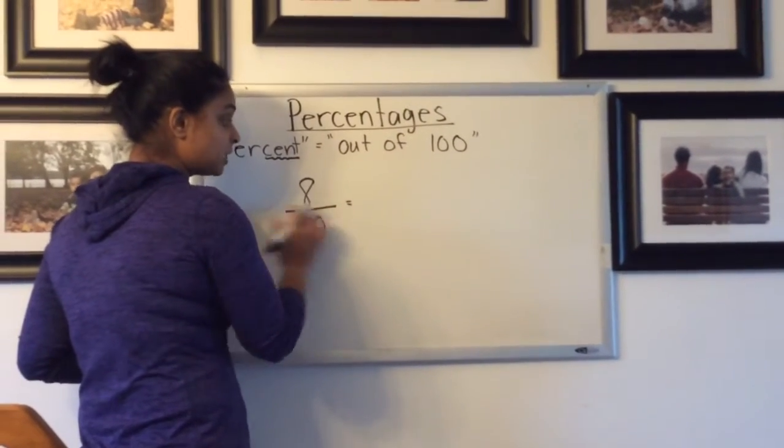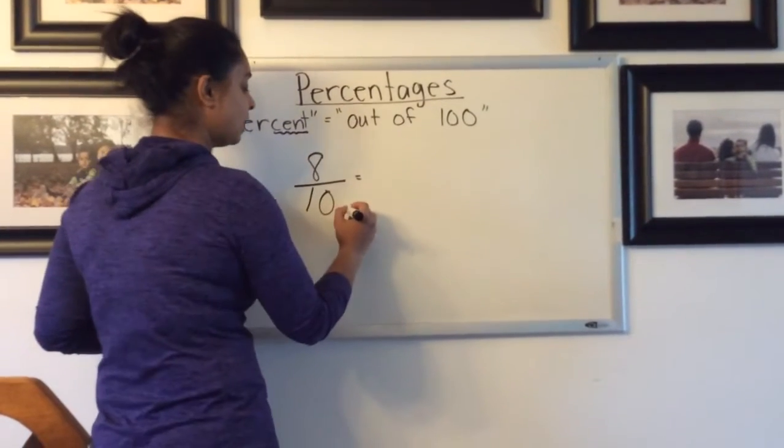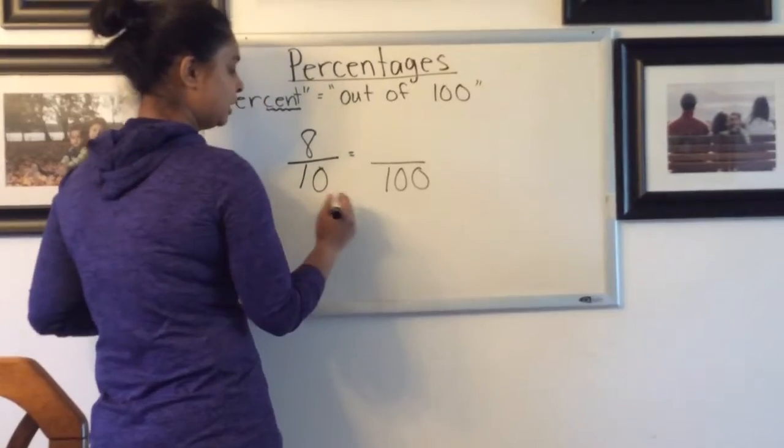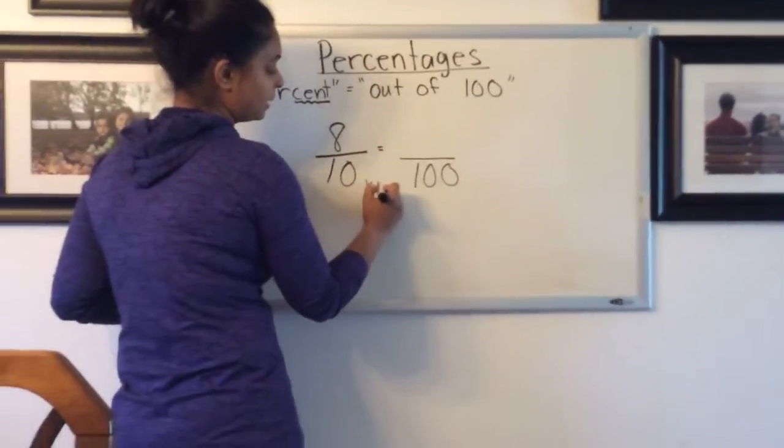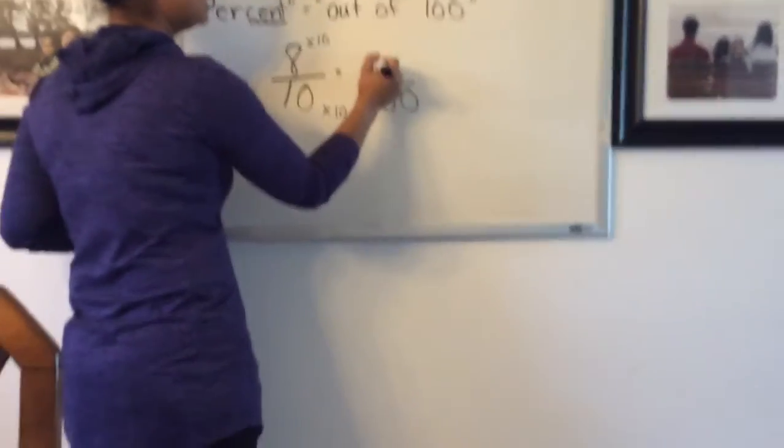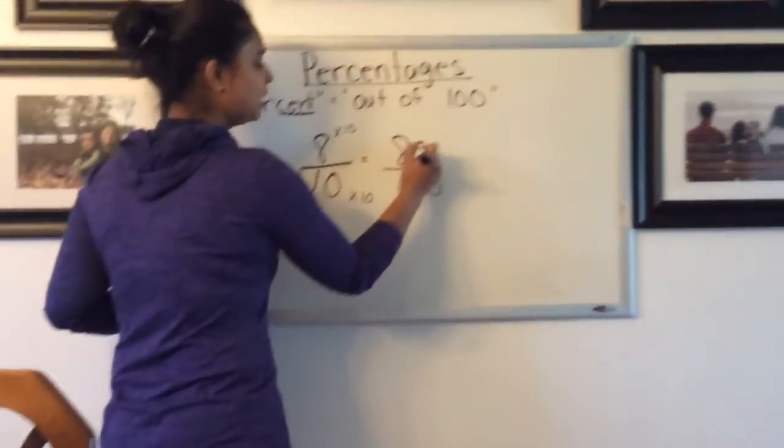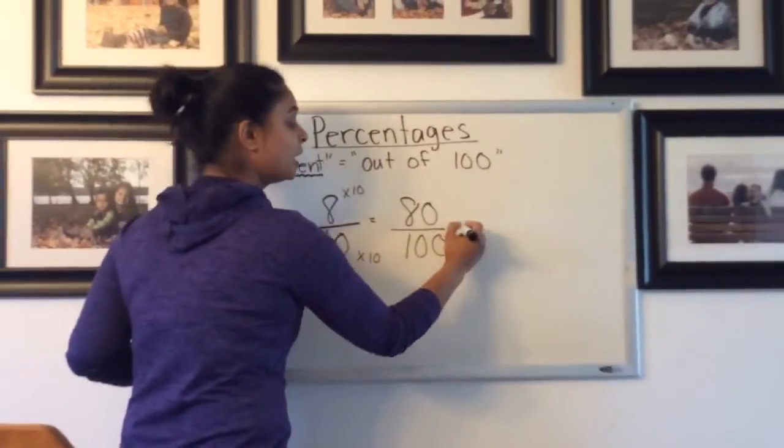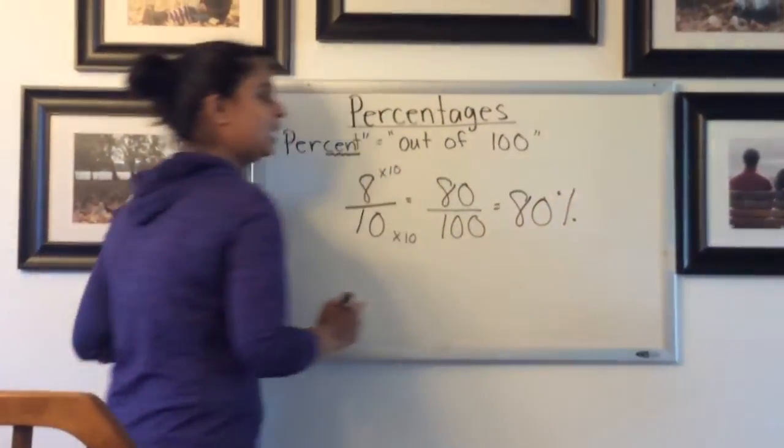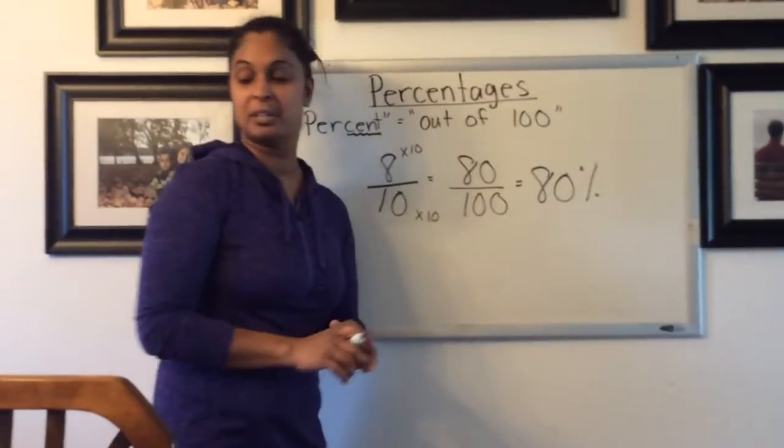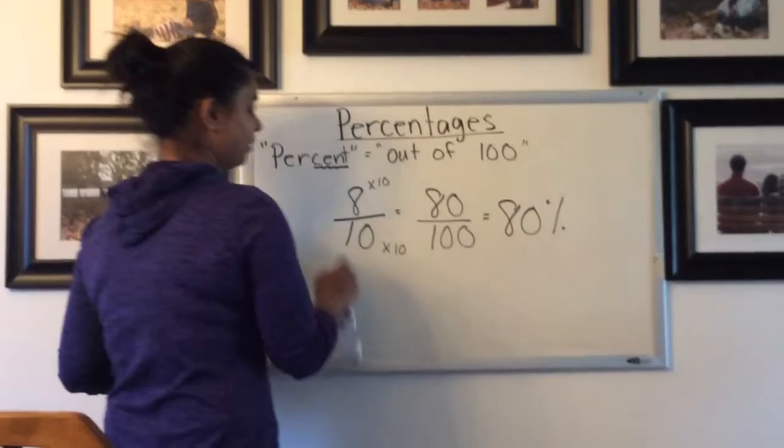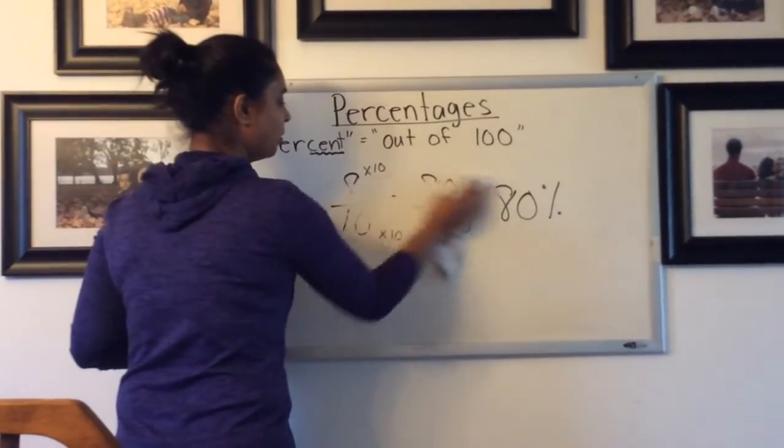This is not out of 100. This denominator is 10 right now. So we want to turn that into a denominator of 100, which means we're going to multiply that denominator by 10. And so we have 80 out of 100, which is 80%, which is an A minus. Good job! 80% is most of 100, so that's a pretty high mark.